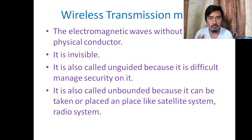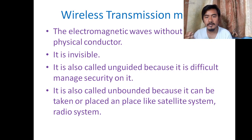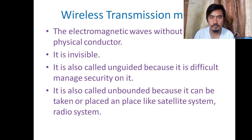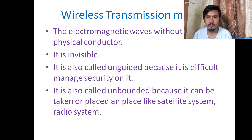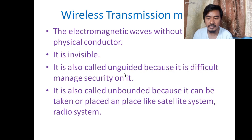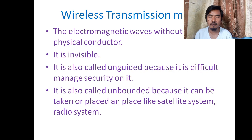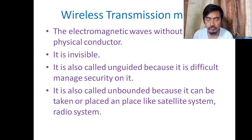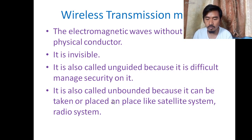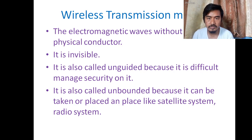Wireless transmission media transmits electromagnetic waves without using a physical conductor. The waves carry data from one device to another through the air. It is invisible — we cannot see it. It is called unguided because it is difficult to manage full security on it. It is also called unbounded because it can be taken or placed anywhere, like satellite systems and radio systems.